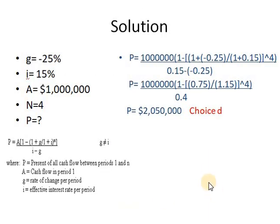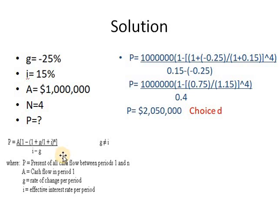The given values: G = 25%, i = 15%, A = $1 million, decreasing by 25% each year, n = 4 years. We need the present value. Since G and i are different, we use the general equation: P equals A times [1 minus (1 + G)(1 + i)^(-N)] over (i minus G).